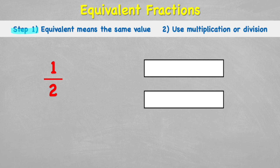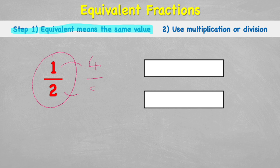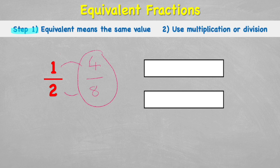Step one: equivalent means the same value. So we've got a fraction, for example one half, but we make it look different by giving it different numbers while keeping it the same value. To do that we can use multiplication and division.